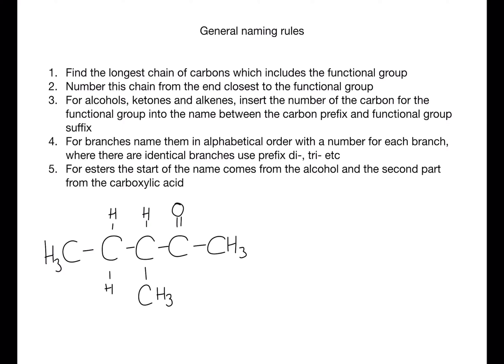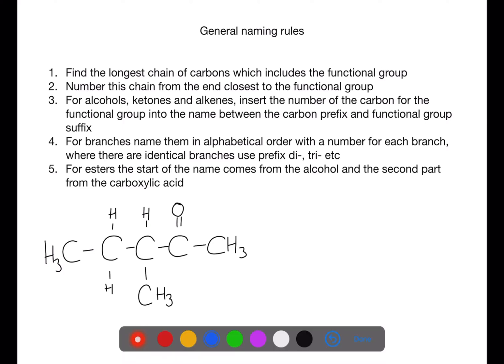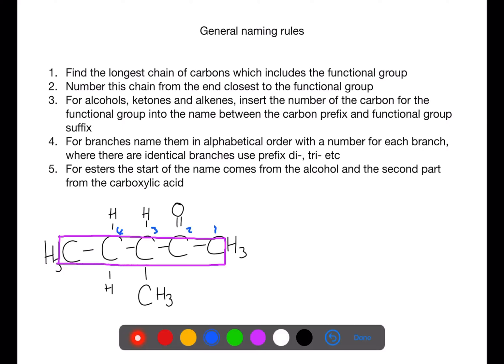For functional groups such as carboxylic acids and aldehydes, the functional group is always on carbon number one. For branches, name them in alphabetical order with a number for each branch. Where there are identical branches, you need to use the prefixes di and tri. For esters, the start of the name always comes from the alcohol and the second part of the name comes from the carboxylic acid.